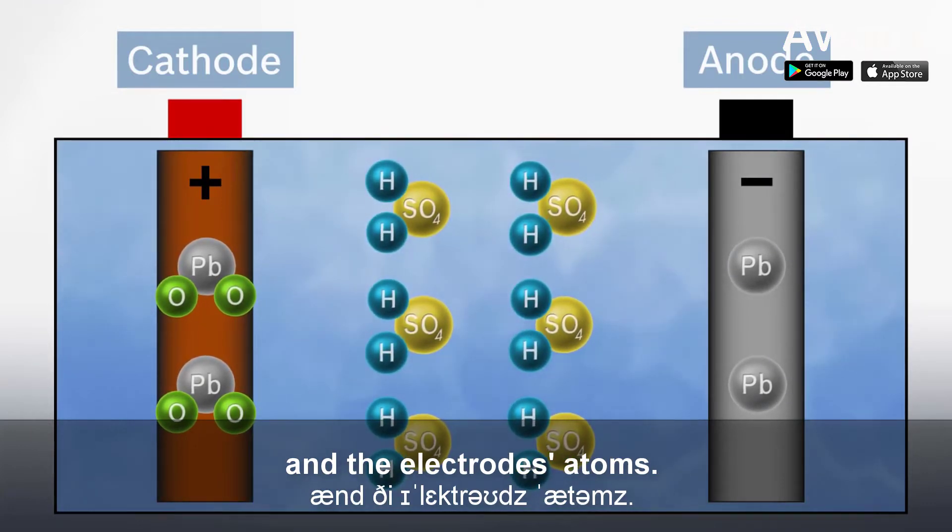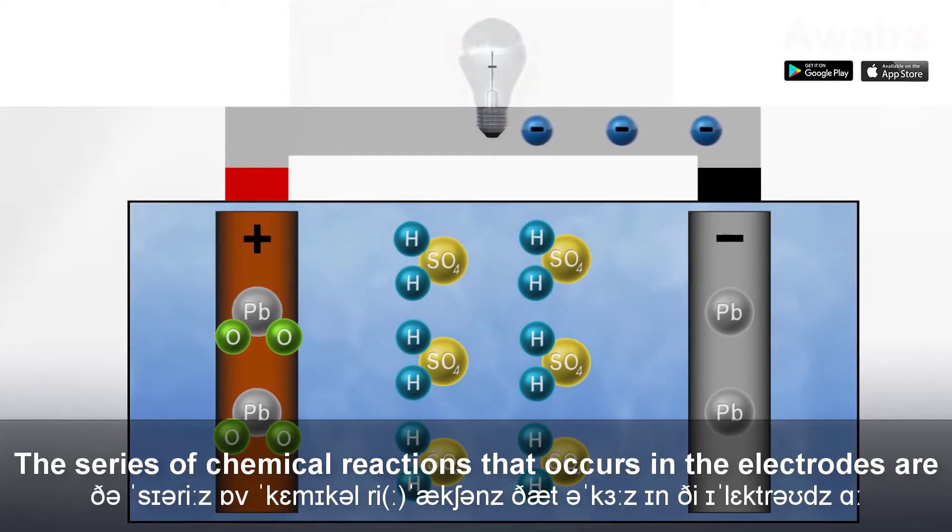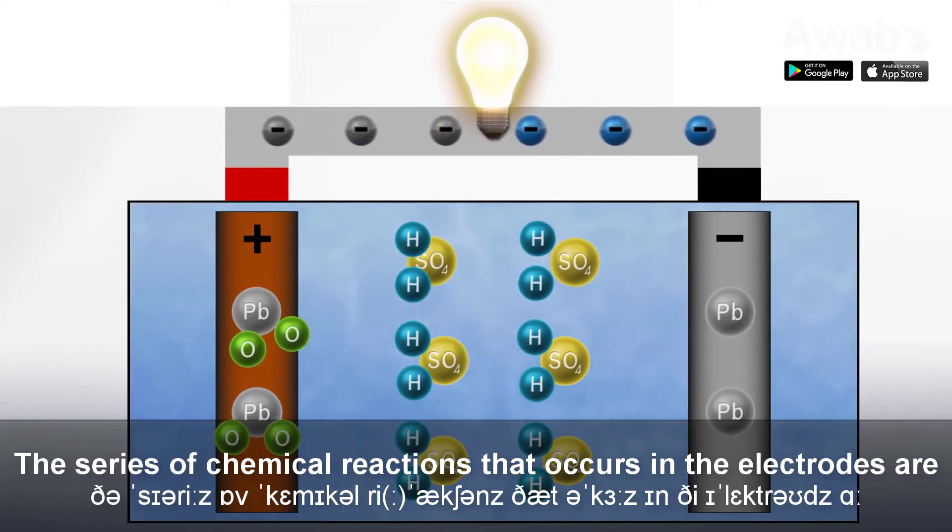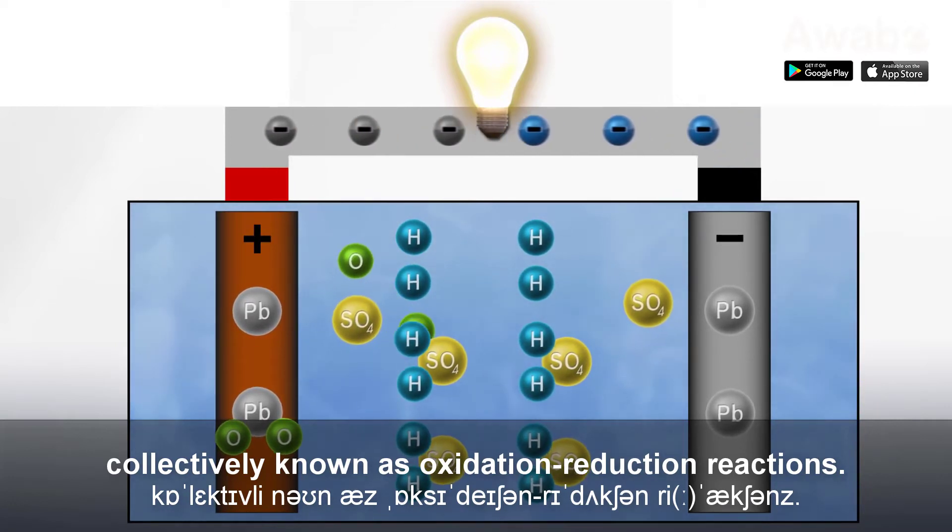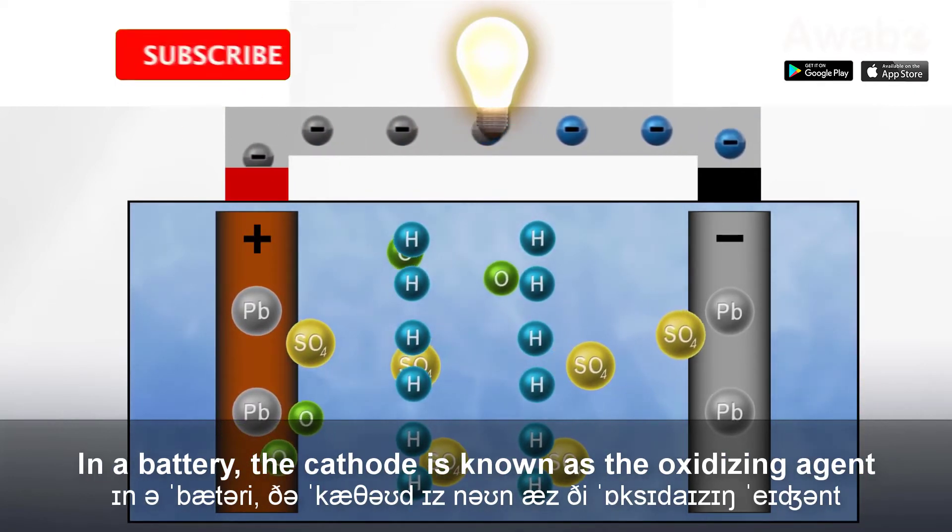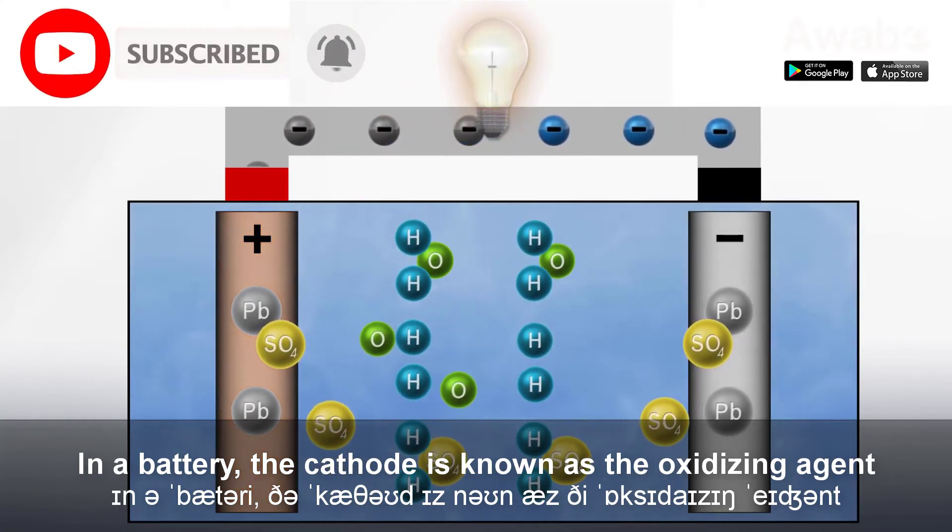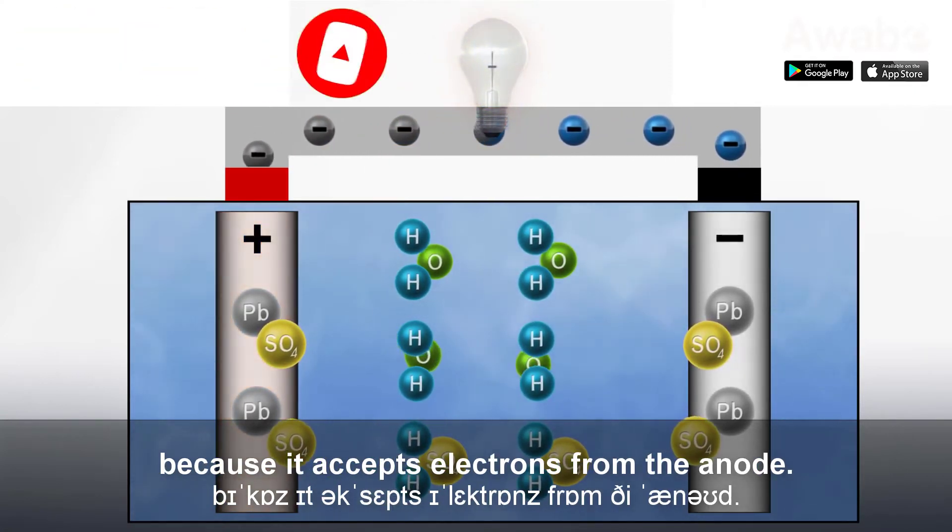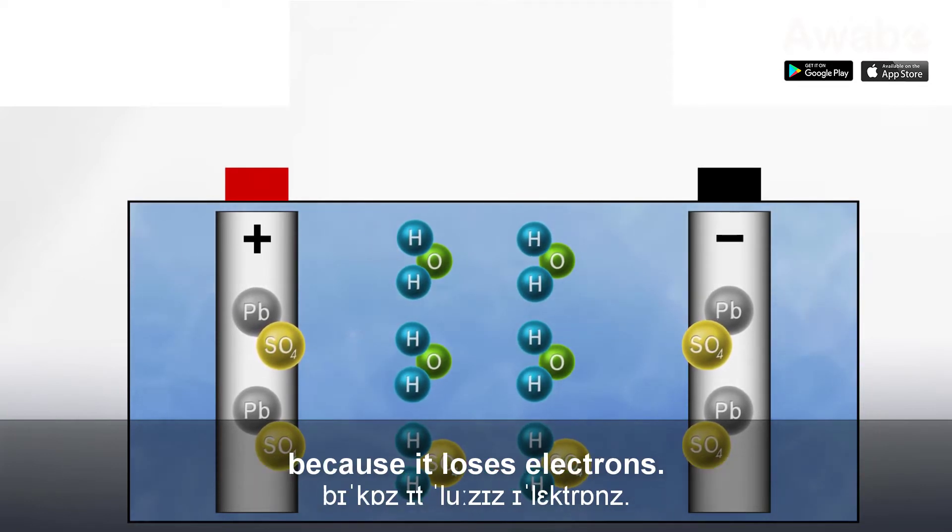The series of chemical reactions that occurs in the electrodes are collectively known as oxidation-reduction reactions. In a battery, the cathode is known as the oxidizing agent because it accepts electrons from the anode. The anode is known as the reducing agent because it loses electrons.